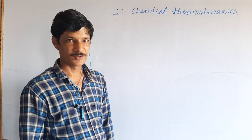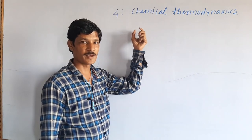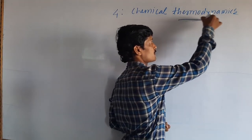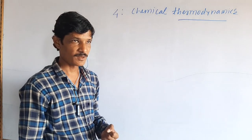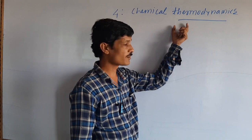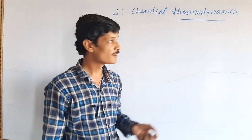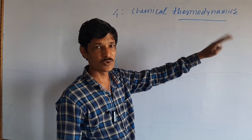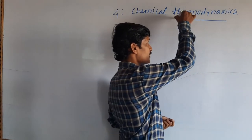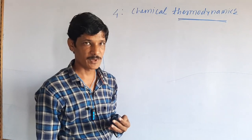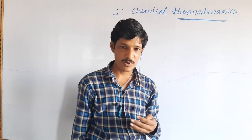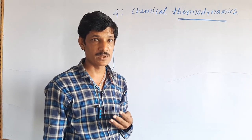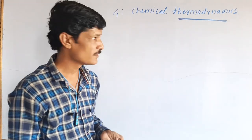Good morning students. Today we are going to learn from Chapter 4, Chemical Thermodynamics. Thermodynamics is a combination of two words: thermo and dynamics. Both are Greek words. Thermo indicates heat in the form of energy, and dynamics is related to motion. Thermodynamics is a separate branch of science that deals with different forms of energy, the quantitative relationship between them, and the energy exchanges that occur during physical and chemical transformations.